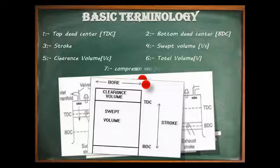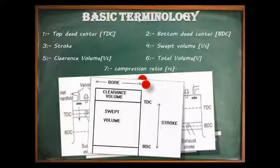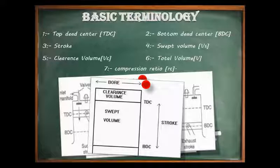Next is the compression ratio, represented as RC. Compression ratio is the ratio of the maximum to minimum volume in the cylinder of an internal combustion engine — that is, the ratio of total volume to clearance volume. A high compression ratio is desirable because it allows an engine to extract more mechanical energy from a given mass of air-fuel mixture due to its higher thermal efficiency. This occurs because IC engines are heat engines, and higher compression ratio permits the same combustion temperature to be reached with less fuel while giving a longer expansion cycle, creating more mechanical power output and lowering the exhaust temperature.